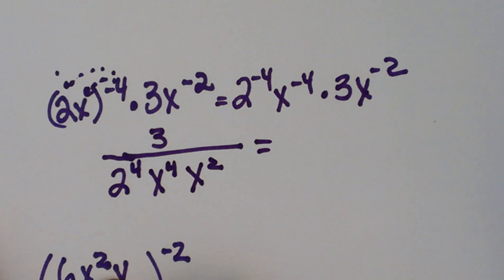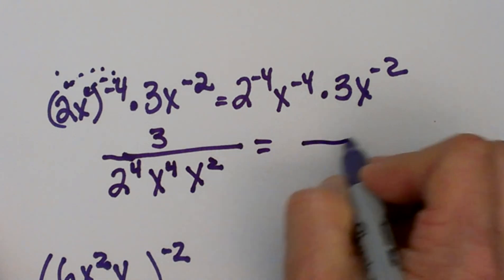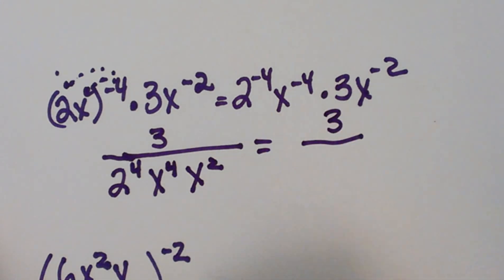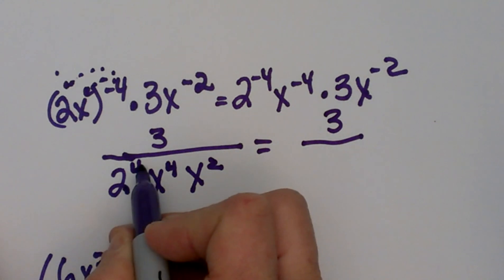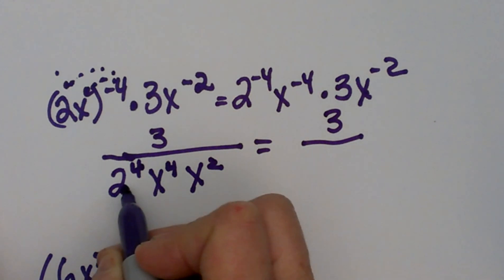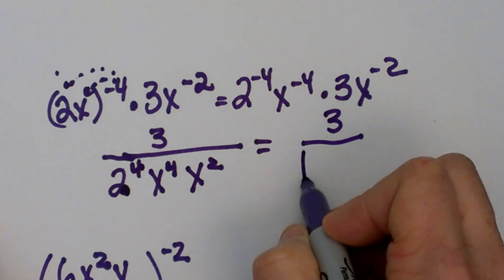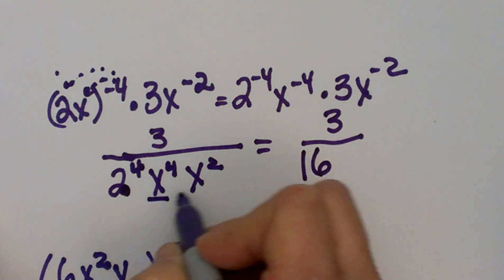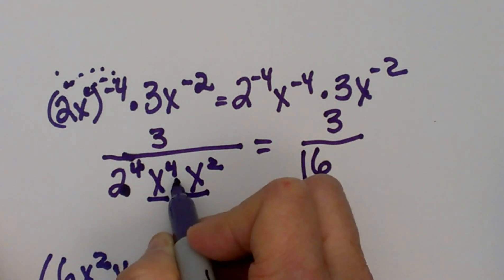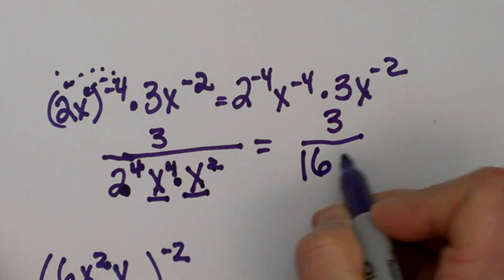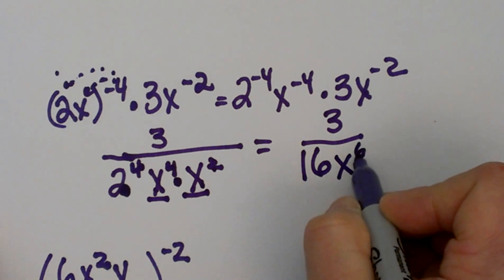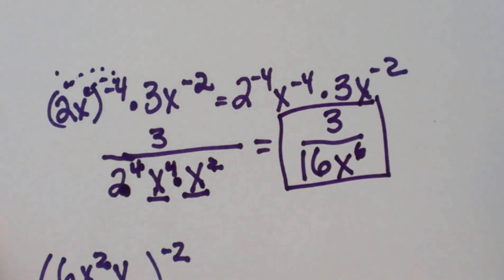Now let's just simplify what we've got. So the numerator is just 3, and then 2^4 that's 2 times 2 which is 4 times 2 which is 8 times 2 which is 16. So that's 16, and then let's combine our x's. When we're multiplying like bases we add exponents, so that's going to be x^6 and that is our final answer.